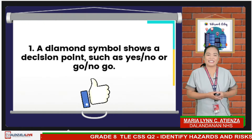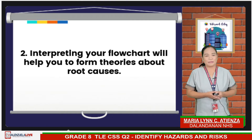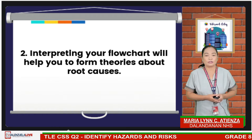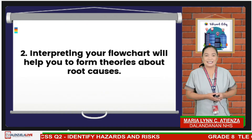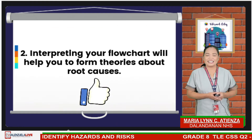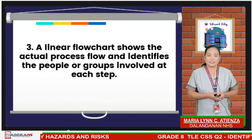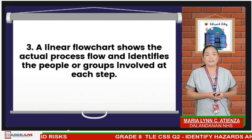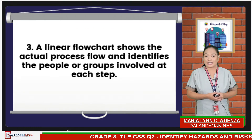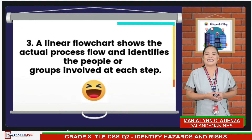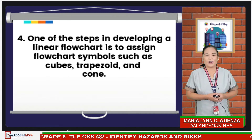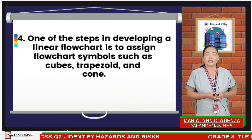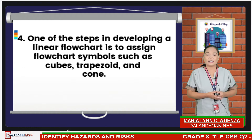Alright, very good. It's a thumbs up. Number 2: interpreting your flowchart will help you to form theories about root causes. The answer is a thumbs up. And number 3: a linear flowchart shows the actual process flow and identifies the people or groups involved at each step. The answer is a ha-ha emoji.